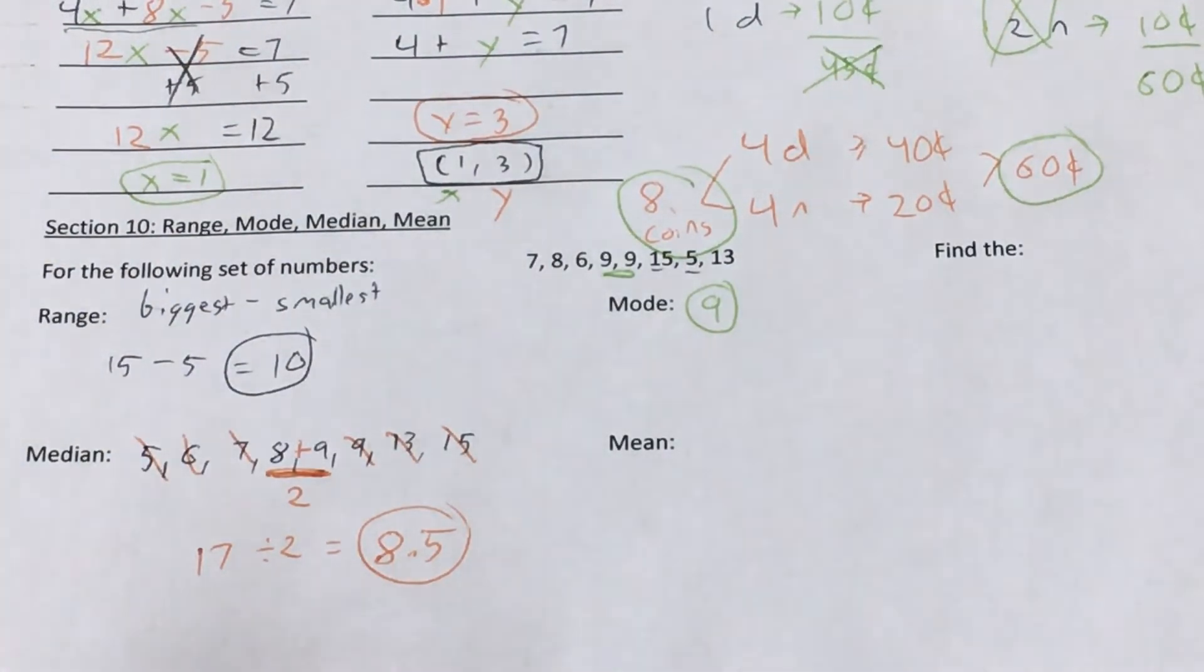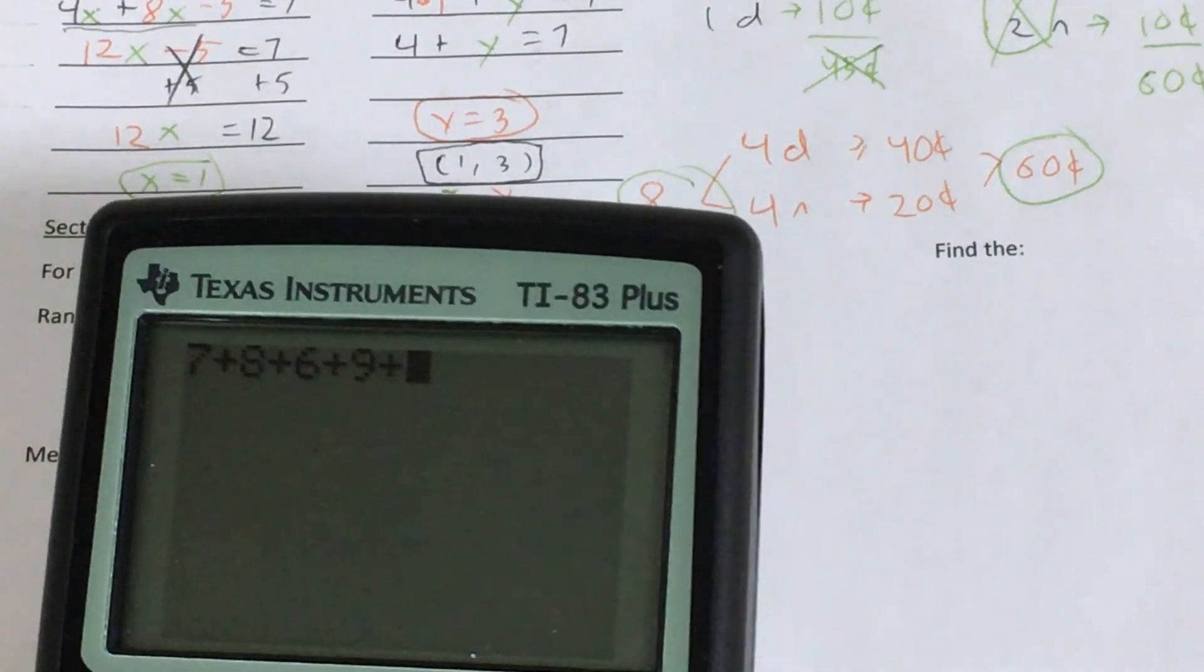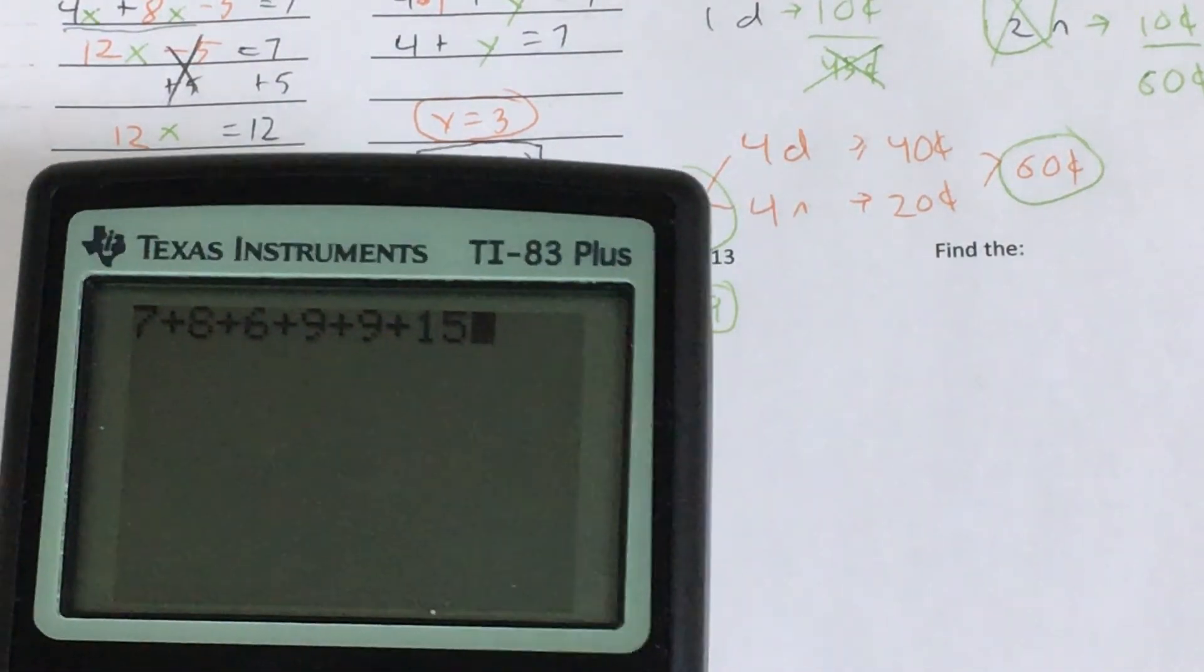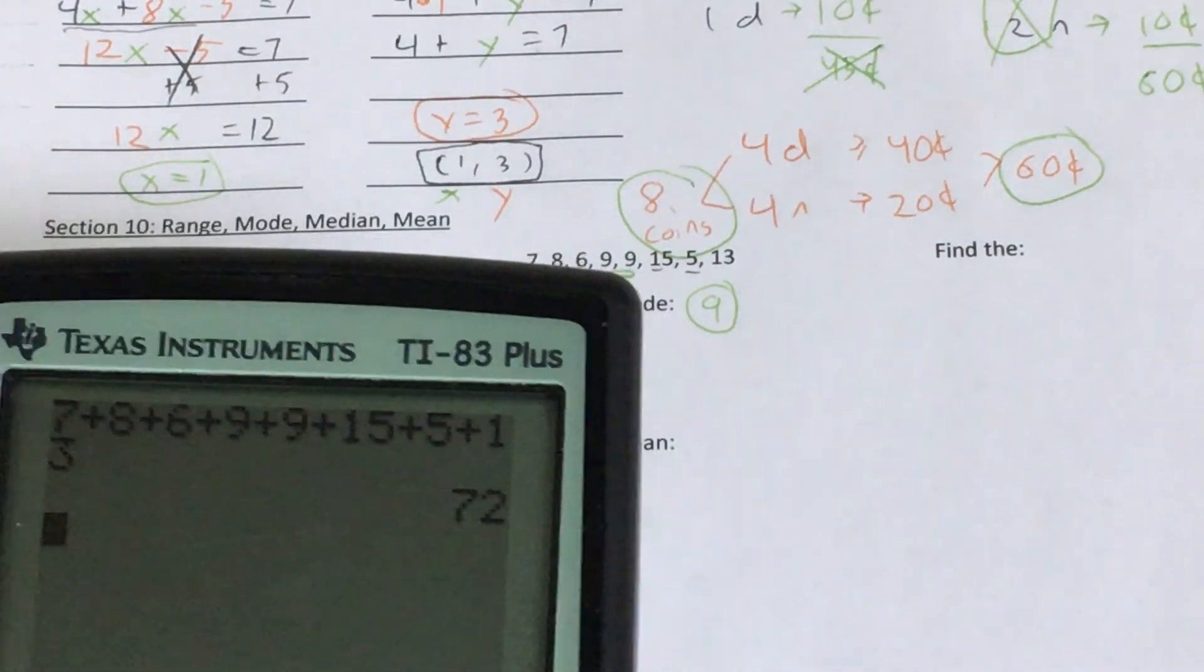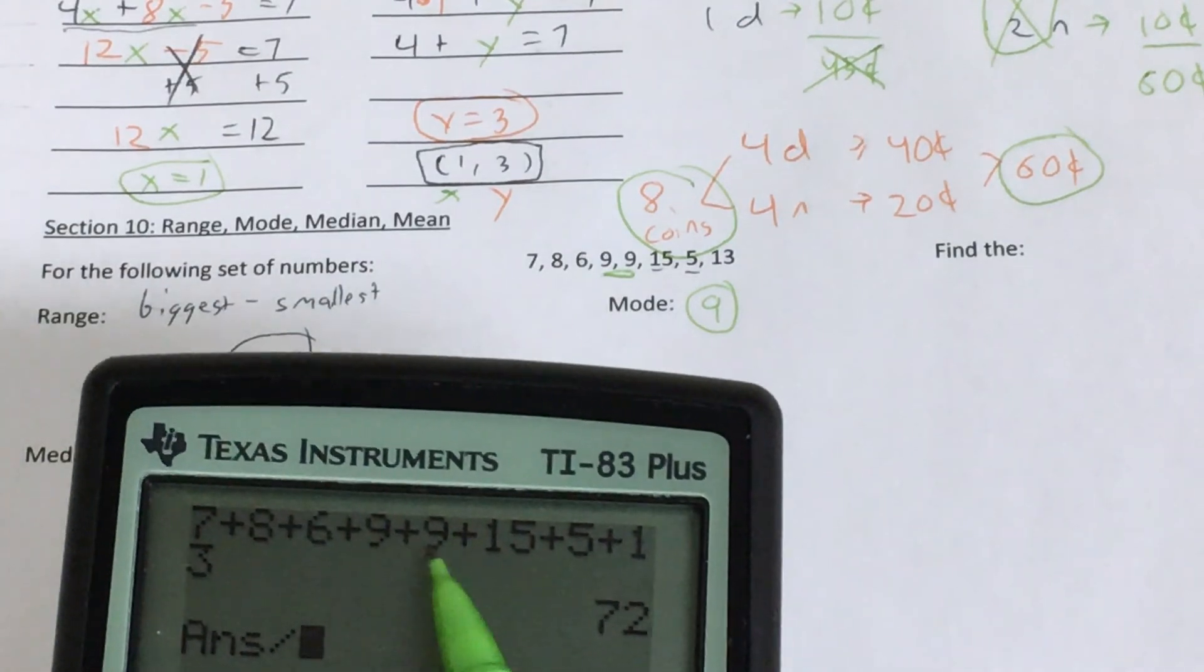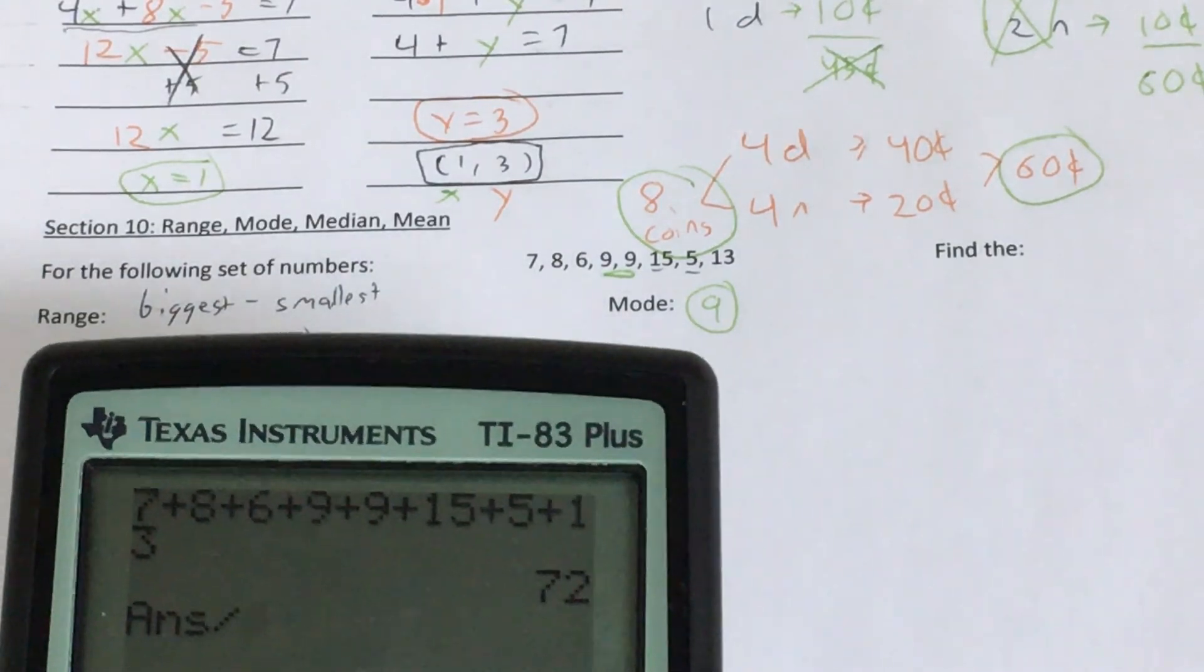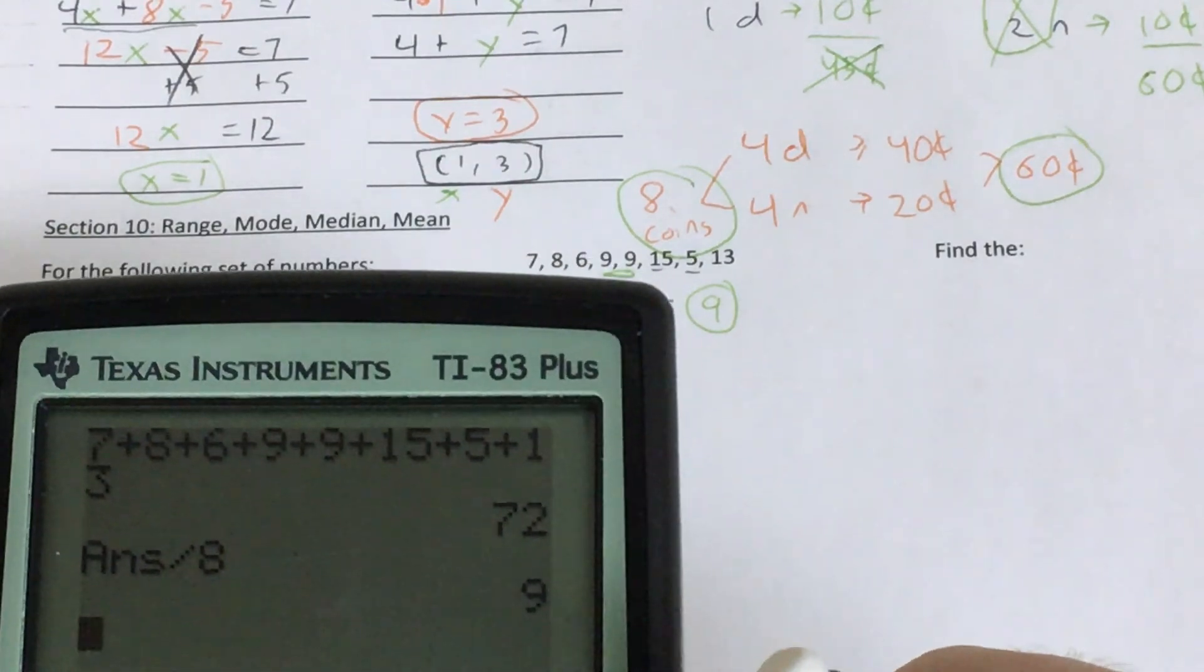So the mean is the last one, and the mean is probably the one that involves the most math. So what I'm going to do is I'm going to add up all my numbers. 7 plus 8 plus 6 plus 9 plus 9 plus 15 plus 5 plus 13. Once I add all these up, I just need to divide by how many numbers there are. So there were 1, 2, 3, 4, 5, 6, 7, 8 numbers. So I divide by 8, and 72 divided by 8 is going to give me a final answer of 9.